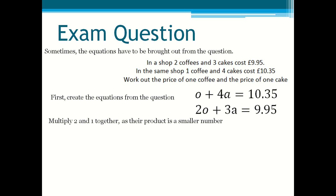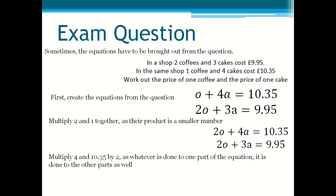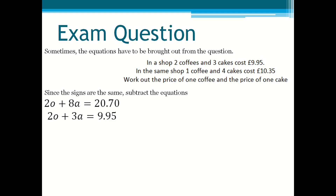Then you multiply 2 and 1 together as their product is a smaller number, so now both O's are the same. You multiply 4 and 10.35 by 2, as whatever is done to one part of the equation is done to the other as well. The bottom equation stays the same because the amount of O's matches the top one, but the top equation has been multiplied by 2. Then you subtract the equations to get 5A = 10.75.